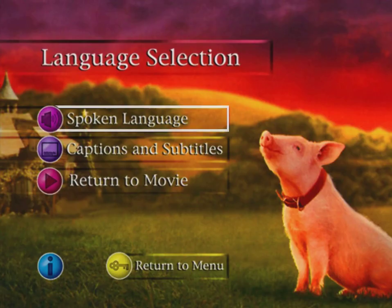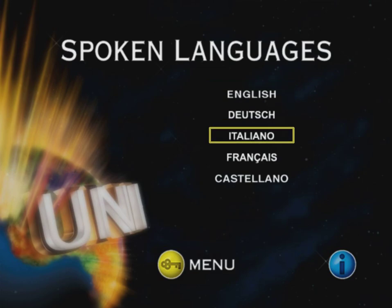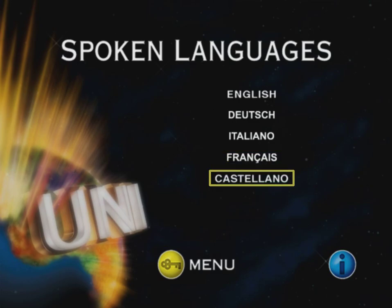We've got language selection, and there's Babe again — hello Babe! Spoken languages are English, German, Italian, French, and Castellano, which I think means Spanish. I don't know why there's the Universal logo right there.